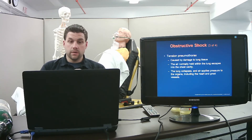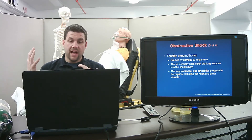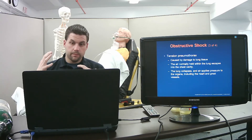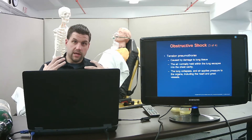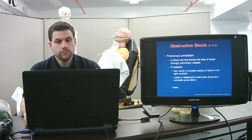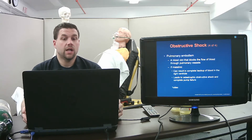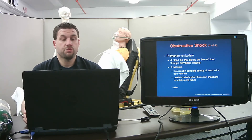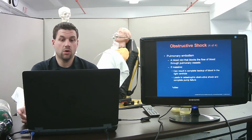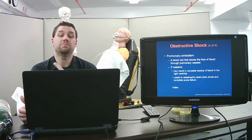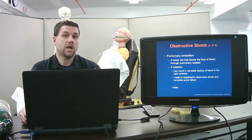Tension pneumothorax is caused by damage to lung tissue — air escapes into the chest cavity and the lung starts to collapse from external pressure. In a pulmonary embolism, a blood clot blocks blood flow through the pulmonary vessels. A massive pulmonary embolism can cause complete backup of blood into the right ventricle, catastrophic obstructive shock, and complete pump failure — these patients do not do well.